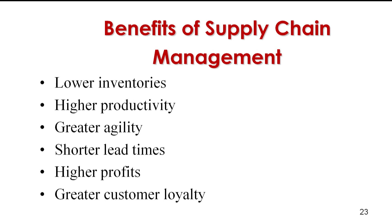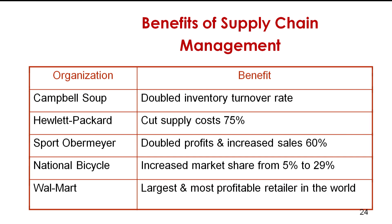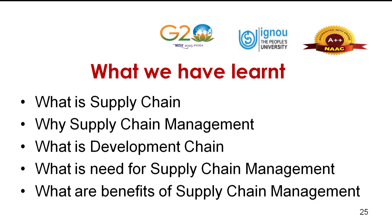Now we come to the benefits of supply chain management. There are six main benefits: lower inventories, higher productivity, greater agility, shorter lead times, higher profits, and greater customer loyalty or customer satisfaction. These are examples where better supply chain management has benefited organisations. In today's session, we have learned what a supply chain is, why there is a need for supply chain management, what is the development chain, and what are the benefits. I trust this session will be helpful in enhancing your capability in the area of supply chain management. Thank you.